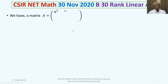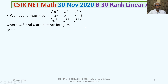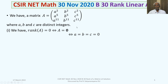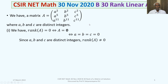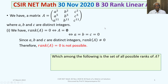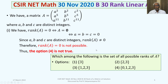Let us now discuss the solution in detail. The rank of A equals 0 if and only if A is the zero matrix, which requires A = B = C = 0. But A, B, C are distinct integers, so rank of A equal to 0 is not possible. Therefore option 4 is eliminated.